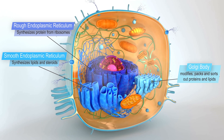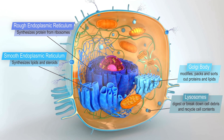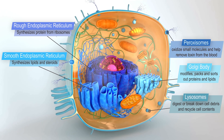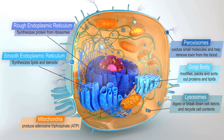Golgi body is responsible for modifying, packing, and sorting out proteins and lipids from the endoplasmic reticulum. Lysosomes contain hydrolytic enzymes and serve to digest or break down cell debris and recycle cell contents. Peroxisomes are responsible for oxidizing small molecules and help remove toxins from the blood. Mitochondria produce ATP, or adenosine triphosphate, which carries high energy to power most cellular processes.